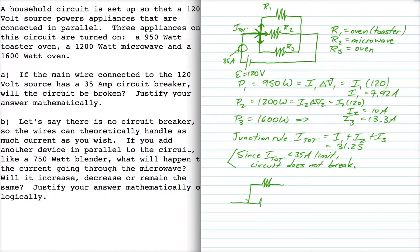So we've got our original three, but now we're going to add a fourth device down here. So we've got R1, R2, R3, and R4. So R4 is the blender, and it has a power of 750 watts.